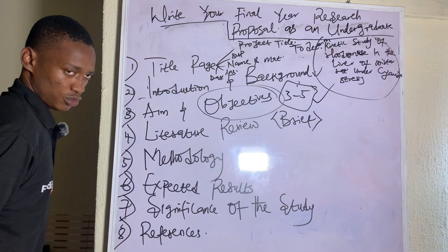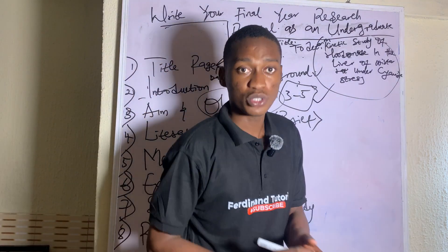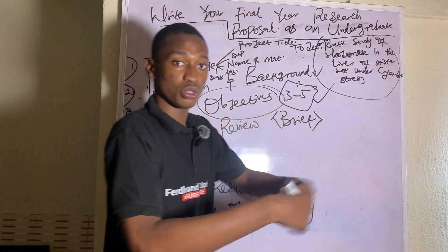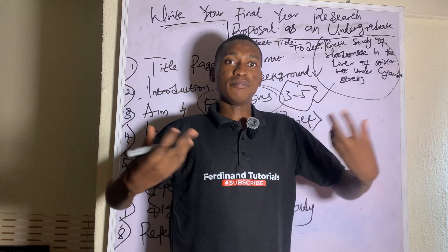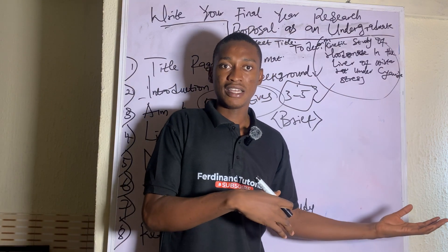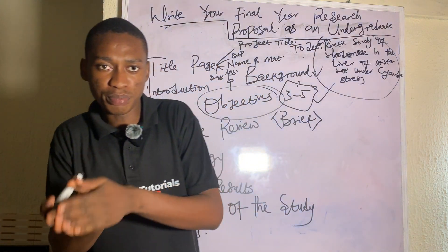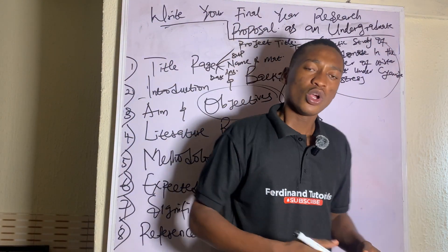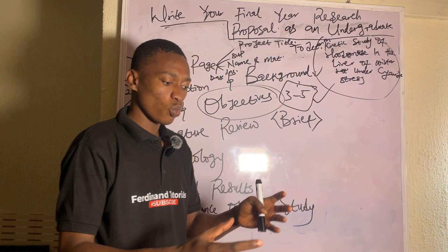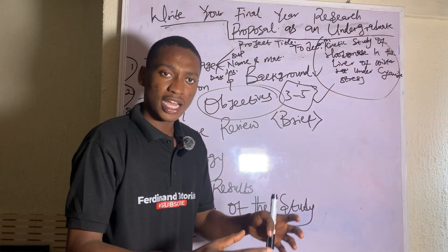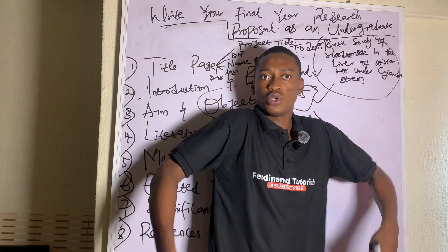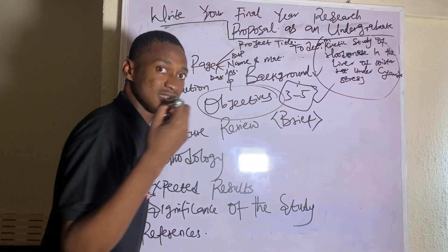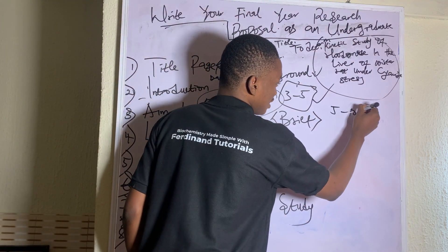The next section is Literature Review. Since it's a research proposal — not your full thesis — your literature review should be brief. This is where you look at recent studies similar to your topic, study what has been done, and identify the gap that your study needs to fill — what has not been done yet that your study is trying to address. Make sure your references are recent, within the last five to ten years.